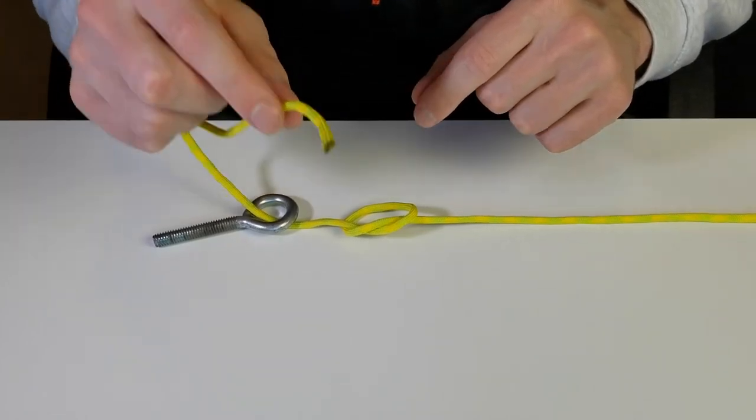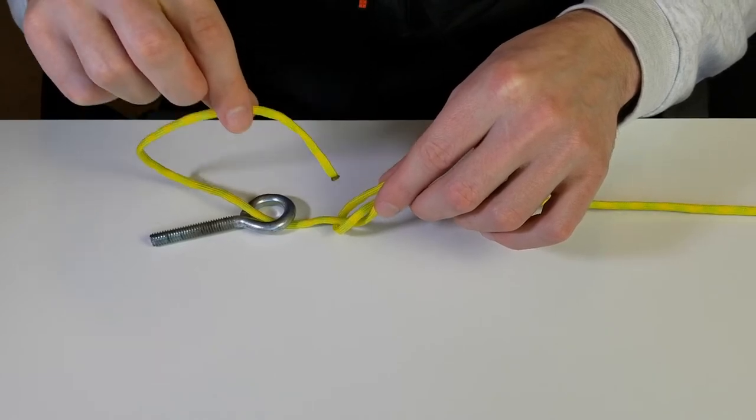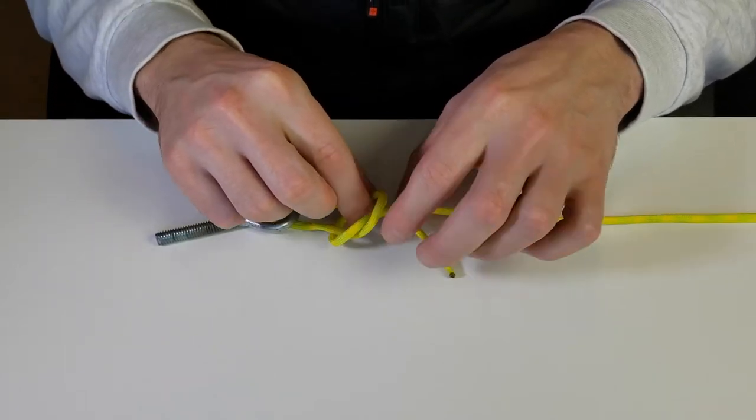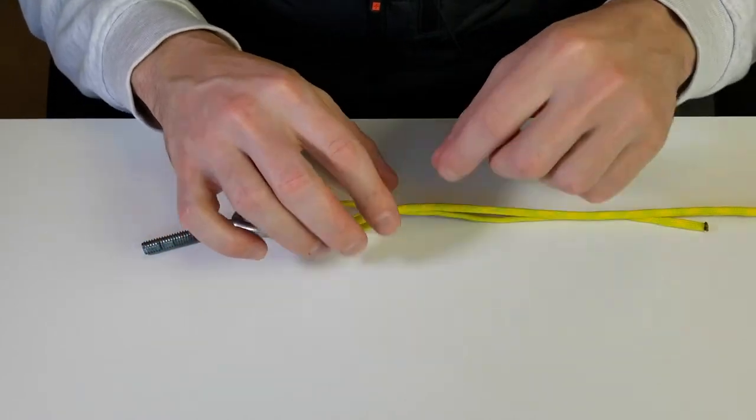We're going to take the tag end here that we just put through the lure and put it down through this overhand knot that we just made. We're going to put it through, pull up the slack, and then we're going to take the tag end of our line and wrap it up the main part of the line.